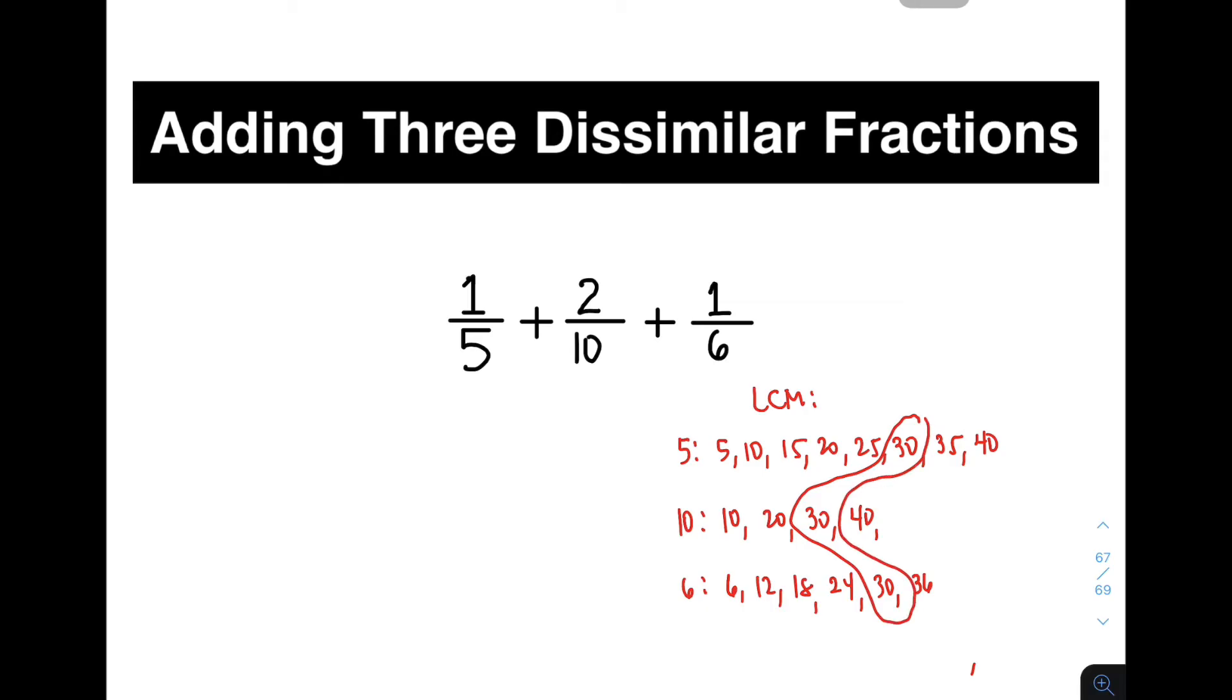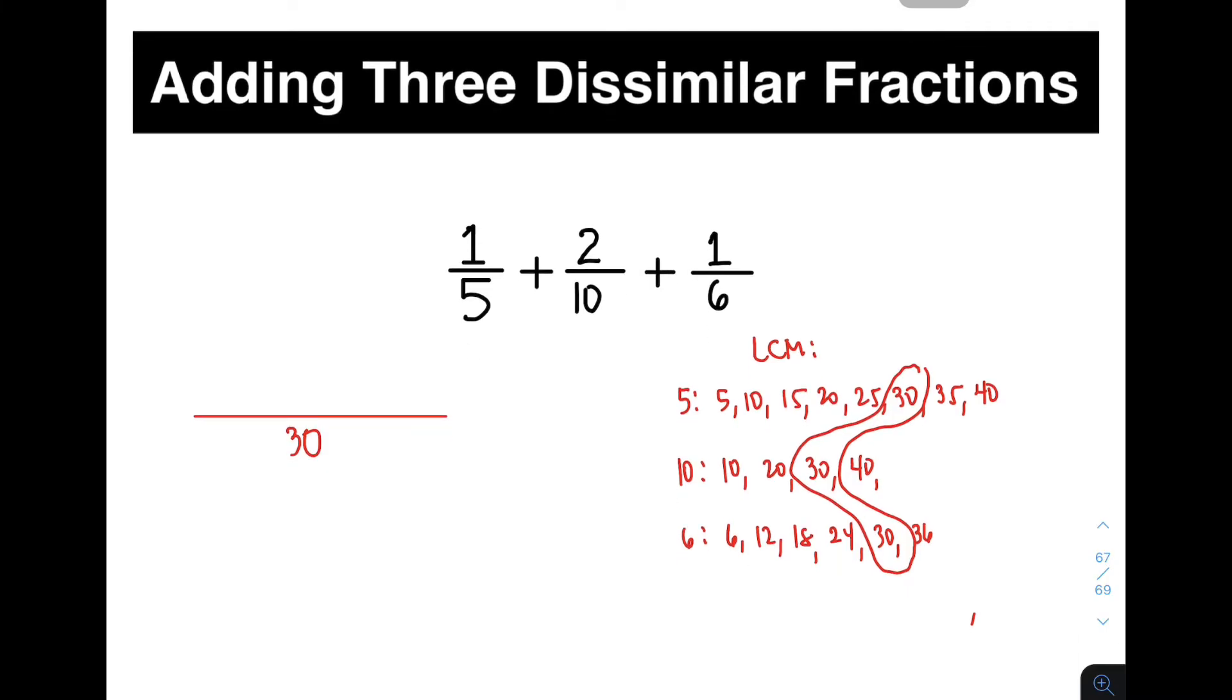This LCM 30 will serve as your least common denominator. So here's the process on how to do it. We have 30 as your least common denominator. Now, try to memorize this process. The process is divide, multiply. You need to divide 30 by 5 and multiply it by your numerator. So 30 divided by 5, it will give you 6 times 1. That is 6.